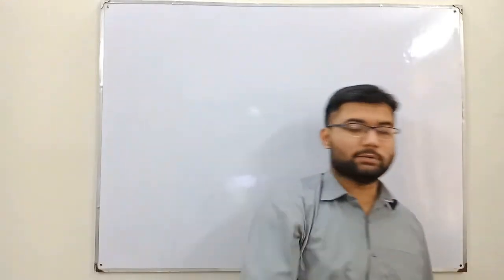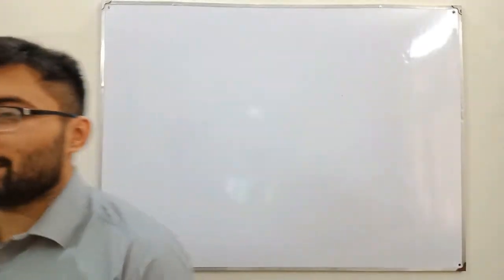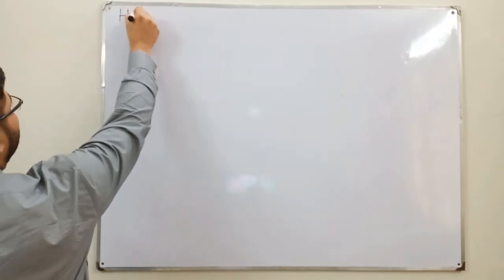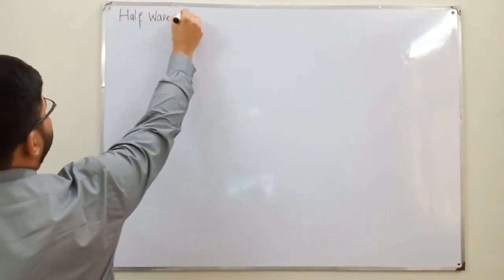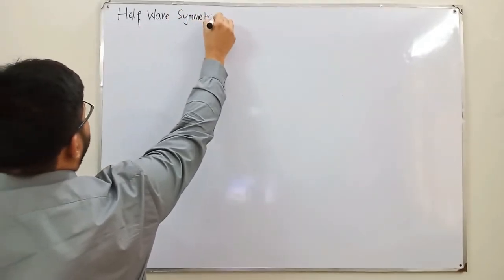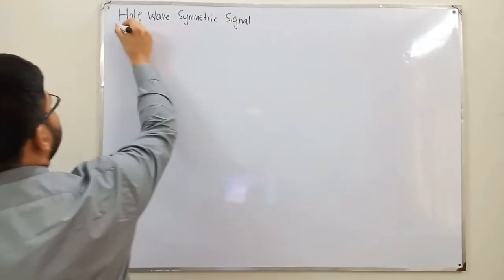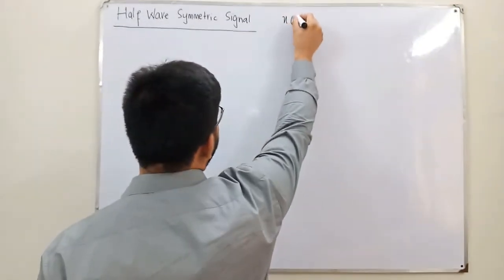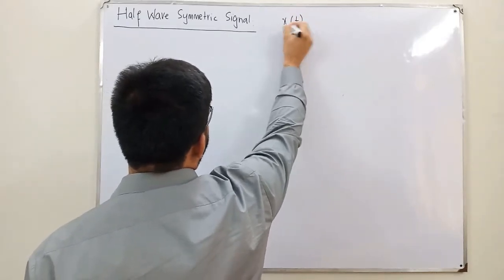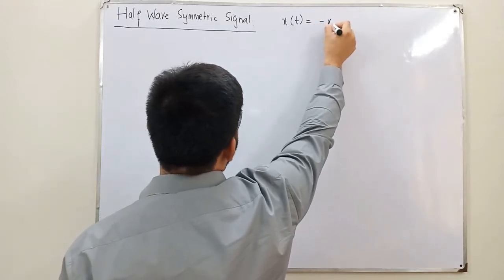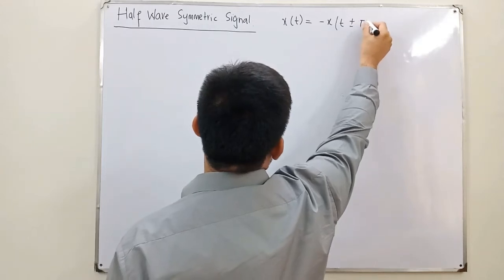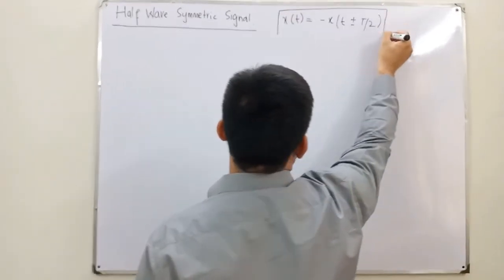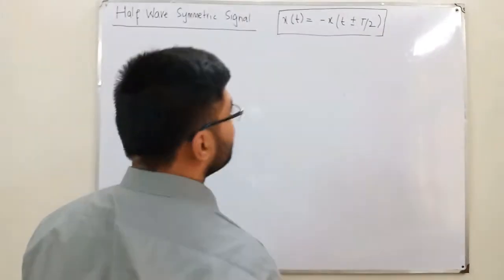Bismillah ar-Rahman ar-Rahim. Assalamu alaikum, Salah Khan here, and today we have another minor topic: the half-wave symmetric signal. The definition is: for a signal to be half-wave symmetric, x(t) should be equal to negative x(t ± T/2). This is the definition of half-wave symmetric signals.